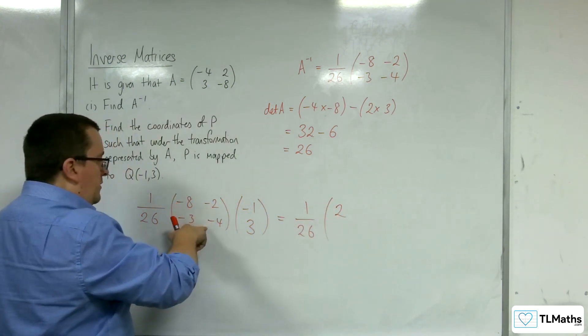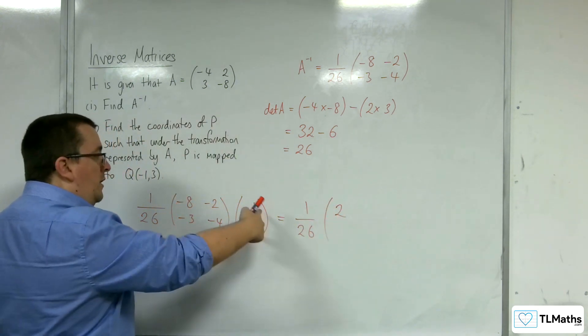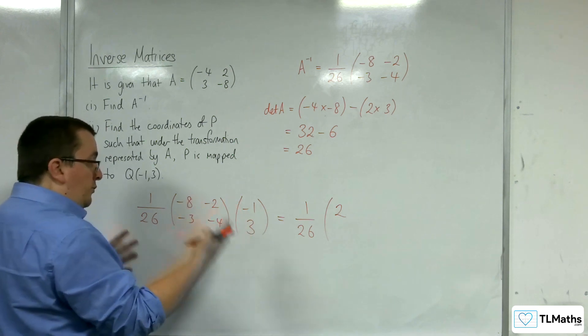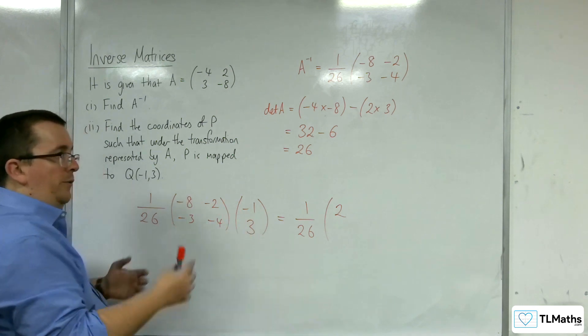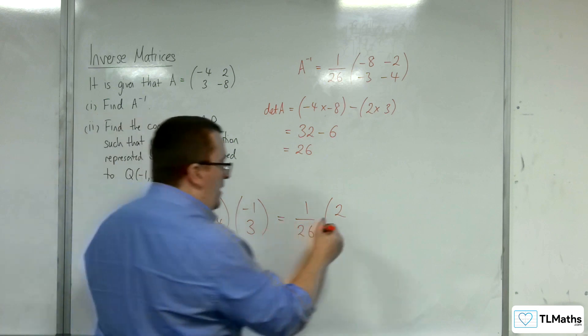Then I've got minus 3 minus 4, multiplying with minus 1, 3. So, minus 3 times minus 1 is 3, and then take away 12. So, 3 take away 12 is minus 9.